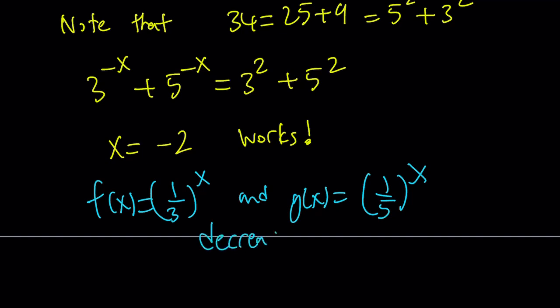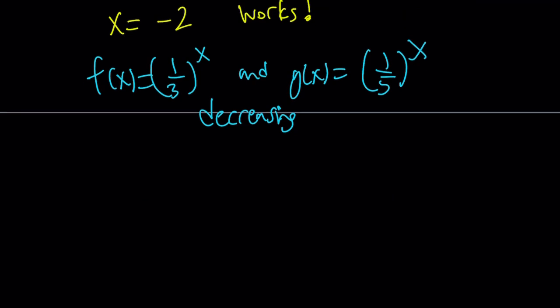Why are they decreasing? Because if you have b to the power x, it's decreasing if b is between 0 and 1. So if you have a fraction, that is like a common fraction, which is not improper or mixed number. Of course, you want it to be positive as well.